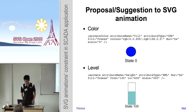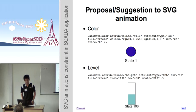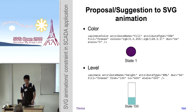For color animation, the states of the color are defined in the color attribute. In this example, there are two states separated by a semicolon. The default color corresponds to state 0, which takes the first color. When the state is changed to 1, it will take 2 seconds for the object to change color from blue to red, which is the second state.